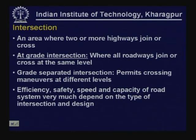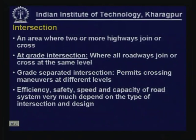What is an intersection? In a given road network, you will have mid-block sections and intersection blocks. An intersection is simply where two or more roads are meeting at a point or area. There are two basic types: at-grade intersection, where all roads meet at the same level, and grade-separated intersection.